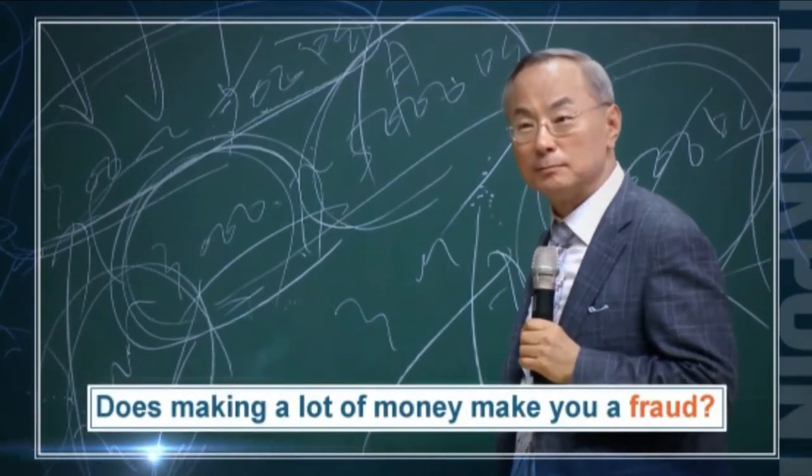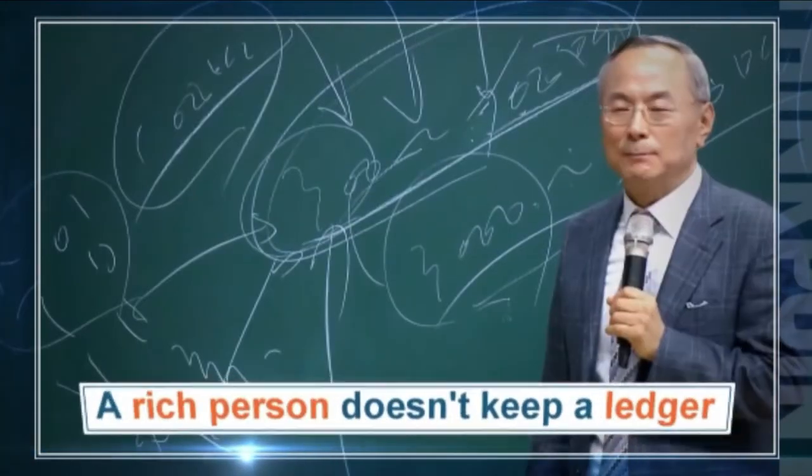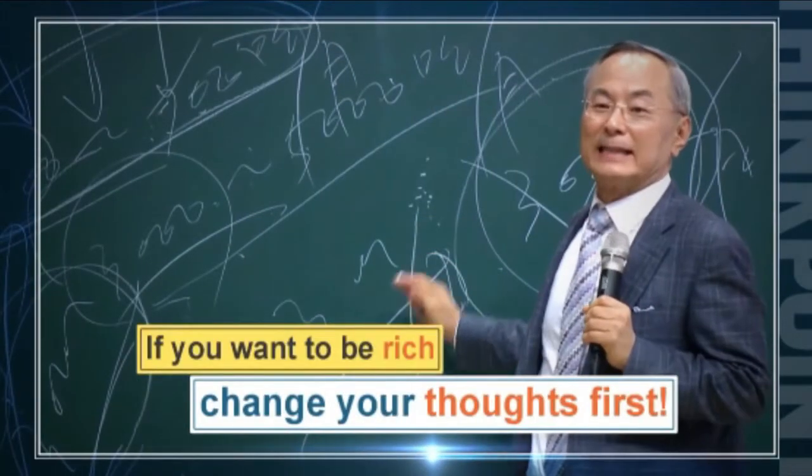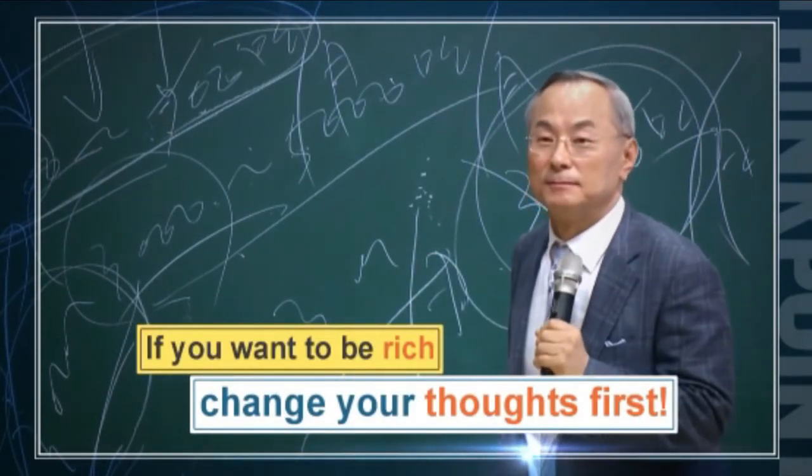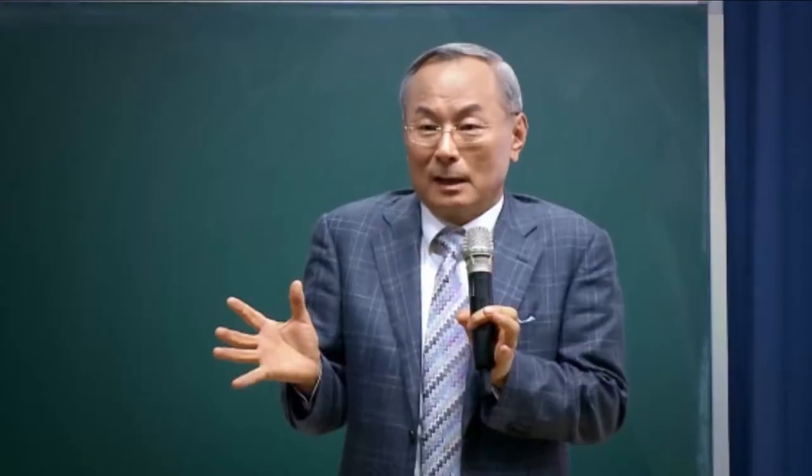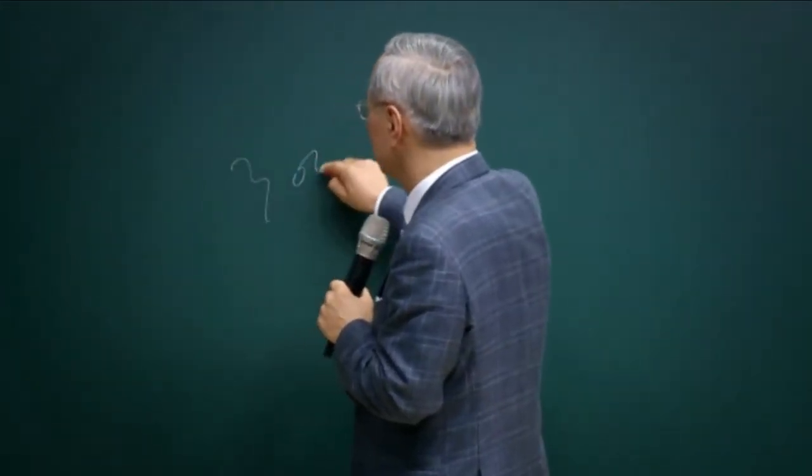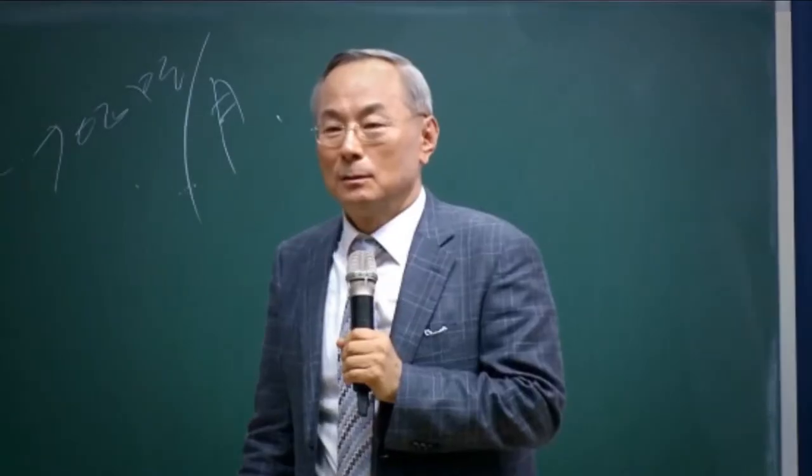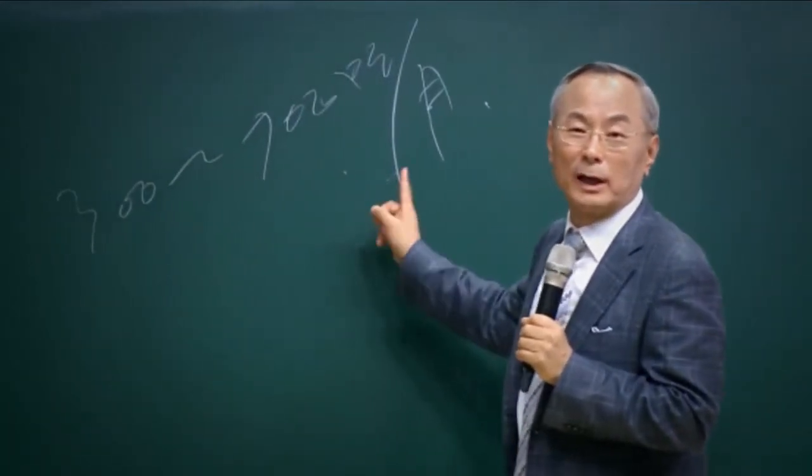Does making a lot of money make you a fraud? The less you earn the harder it is. I've never seen a rich man keep a ledger. You make 30k? My gosh, you're kidding me. Usually the income people expect is three thousand to seven thousand dollars a month. Most people think this way since most people aim for this.